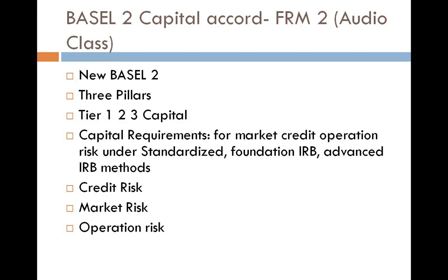There are three issues to address in the IRB framework: the risk component, the risk weight function, and minimum capital requirements. The risk component — the risk parameter estimate — is either developed internally or taken from a supervisory estimate. The risk weight function translates the risk component into risk-weighted assets. The minimum requirements are standards that must be met before a bank is eligible to use the IRB approach. Under the foundation IRB, the bank only estimates the probability of default; under the advanced IRB, banks can also estimate loss given default, exposure at default, and effective maturity. Under either approach, the bank uses the same risk weight function to derive capital requirements.